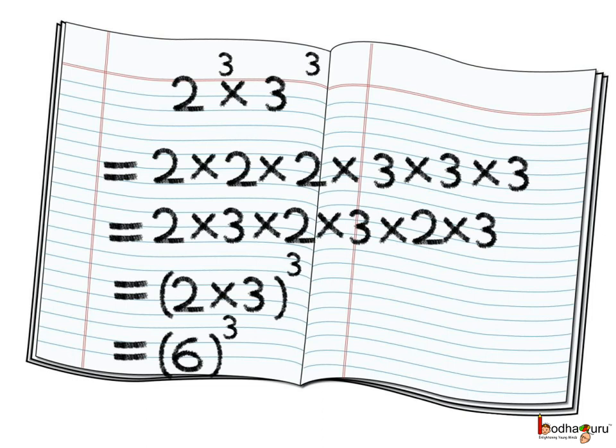So it is like multiplying 2 into 3, three times — that is 2 multiplied by 3 to the power 3. We know 2 multiplied by 3 is equal to 6. So we can say 2 to the power 3 multiplied by 3 to the power 3 is equal to 2 into 3 to the power 3, which is equal to 6 to the power 3.